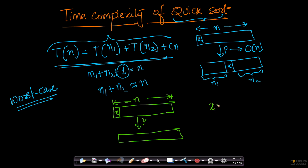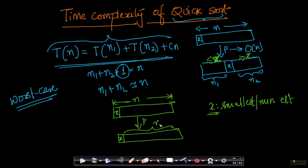If x is the smallest or minimum element, then x will stay at position 0 at the end of the partition function, because there are no elements less than or equal to x — that is the definition of the minimal element. So in such a case, your n1 equals 0 and your n2 equals n minus 1. This is the worst case, because you are not actually splitting the problem into two meaningful parts.